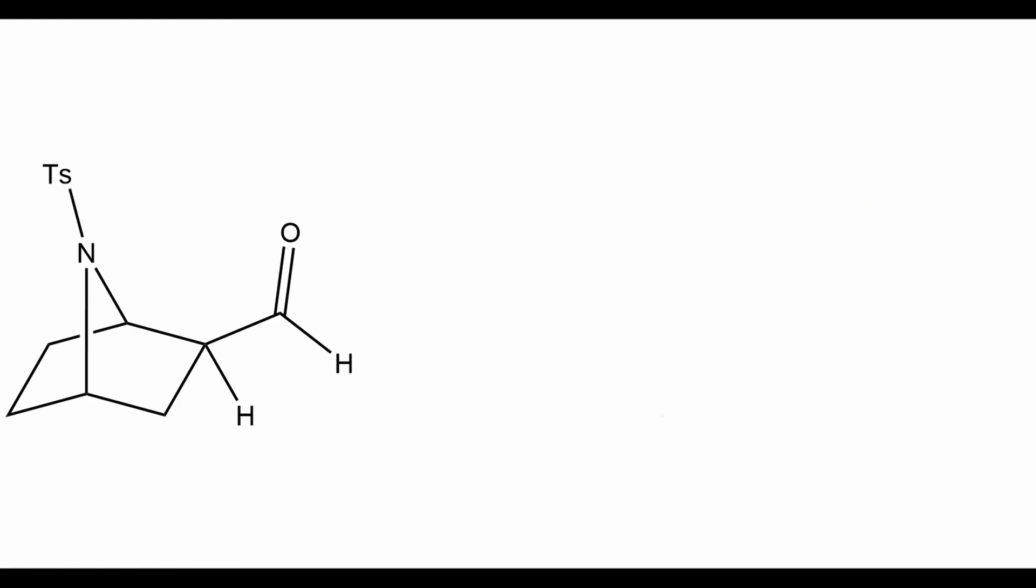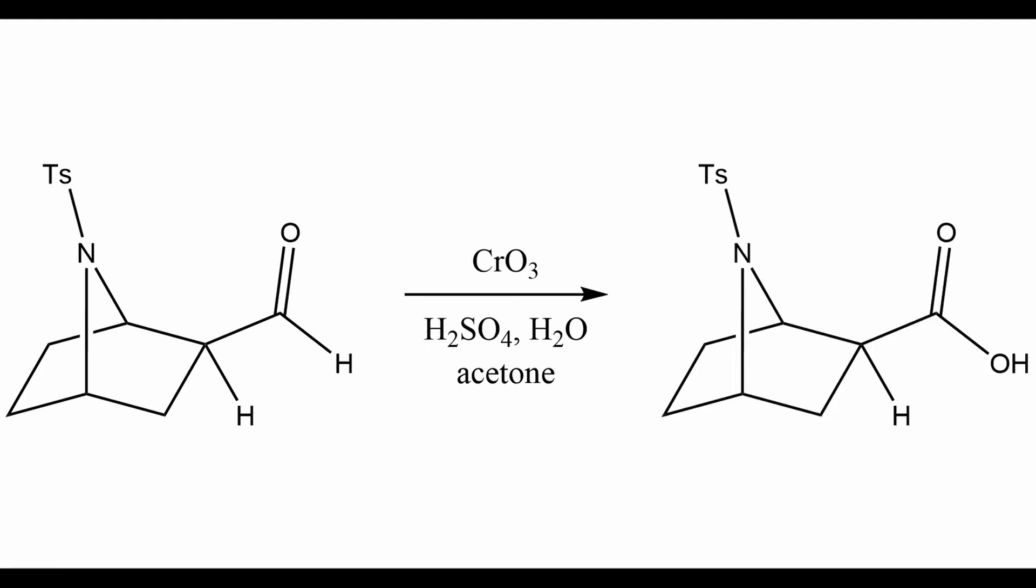At one point in the synthesis, the group ends up with this bicyclic compound, where we have an aldehyde group on the ring here, and they treated that aldehyde with very simple Jones reagent conditions, with chromium trioxide in aqueous sulfuric acid and acetone, just like we discussed, to actually oxidize this aldehyde to the carboxylic acid.